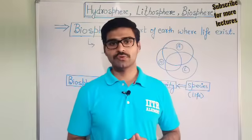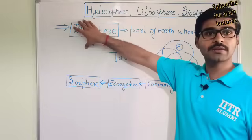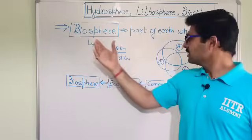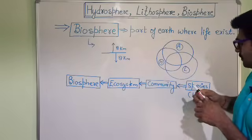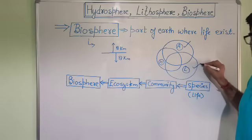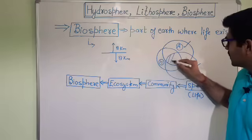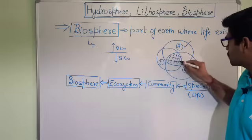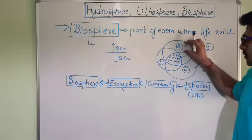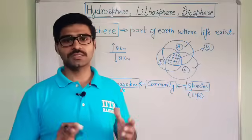Now let's come to the last segment of the environment, that is Biosphere. Biosphere is the part of Earth where life exists. We know that life exists in the atmosphere, in the hydrosphere, and on the lithosphere. So the part where all these components — atmosphere, hydrosphere, and lithosphere — interact with each other, and where life exists, is the biosphere.